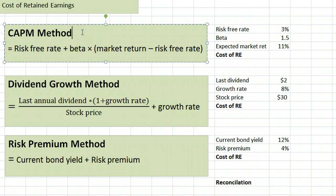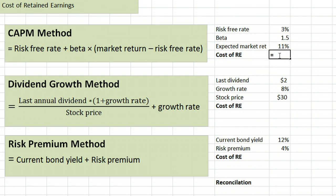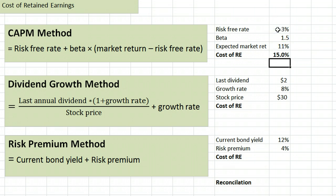Starting with the CAPM method, we just use the normal CAPM equation — there is a separate video with a link here if you want a more detailed look. We take the risk-free rate, 3%, plus the stock's beta, 1.5, times the expected market return, 11%, minus the risk-free rate again, 3%. That gives us a cost of retained earnings of 15%.